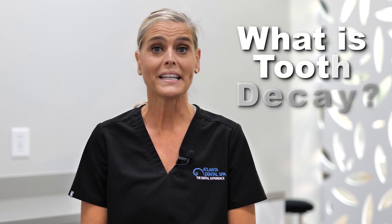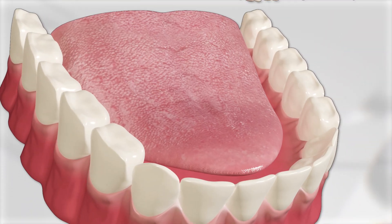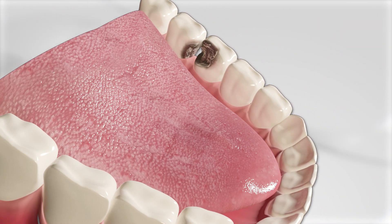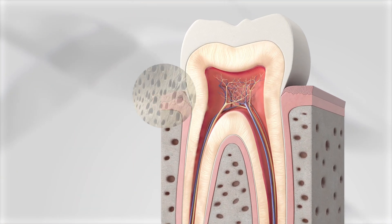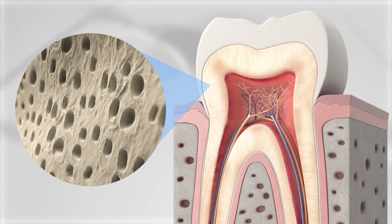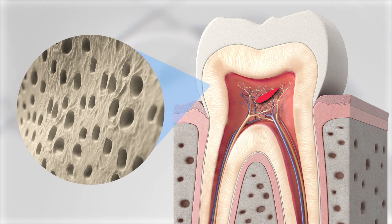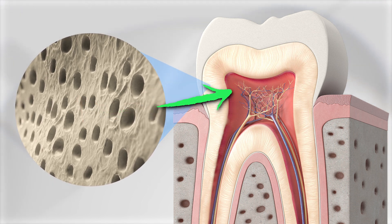You may be wondering, what is decay or cavities? Those two terms can be used interchangeably. Decay, to put it simply, is basically an infection in your tooth, and we have to think of teeth kind of like sponges. They have little tubules that run to the nerve. Those tubules at all times are either leaching minerals out or absorbing them in.